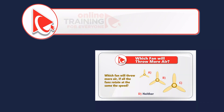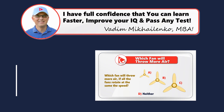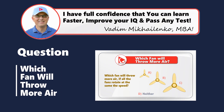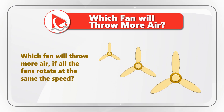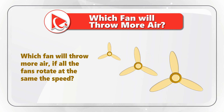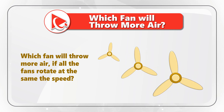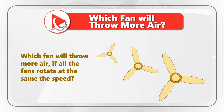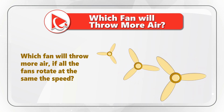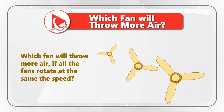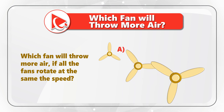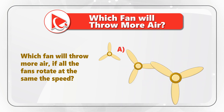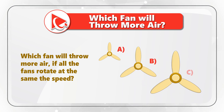This is one of the most exciting questions, because it allows you to test your analytical skills and understanding of physics. You need to determine which fan throws more air if all the fans rotate at the same speed. The choices are fan A, fan B, fan C, and choice D — neither fan.